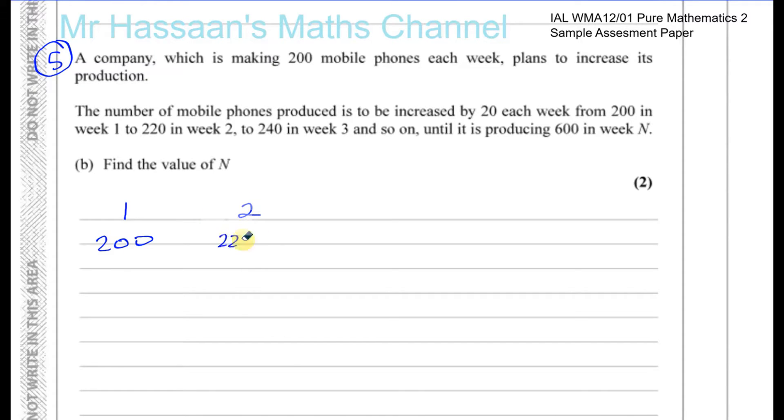So you've got week 1: 200, week 2: 220, week 3: 240, and so on up to week n where they're producing 600. We need to find the value of n. It's an arithmetic series where a, the first term, is 200 and the common difference d is 20, increasing by 20 each week.